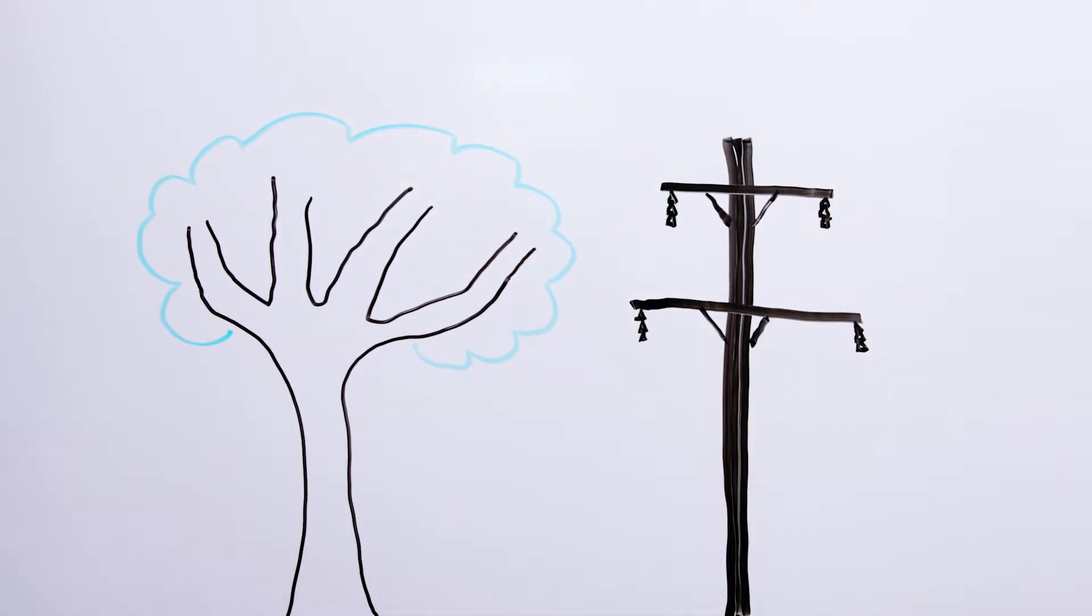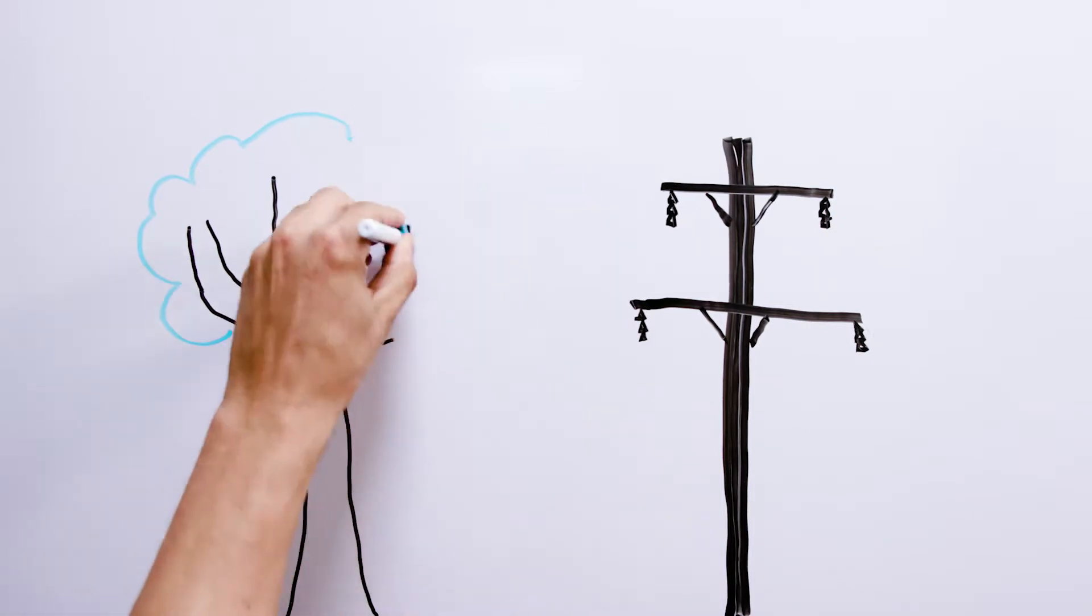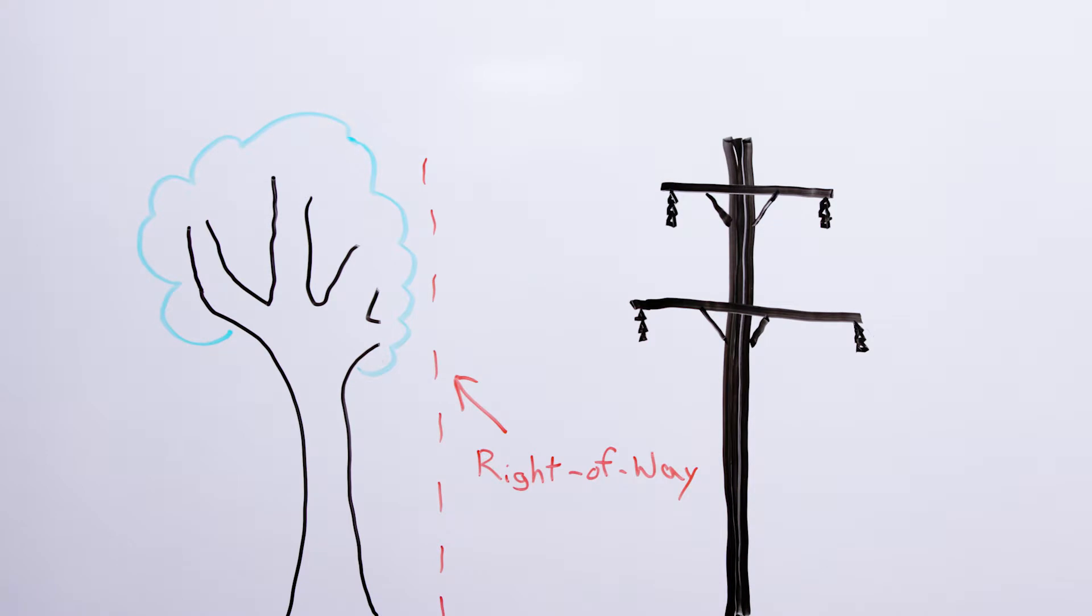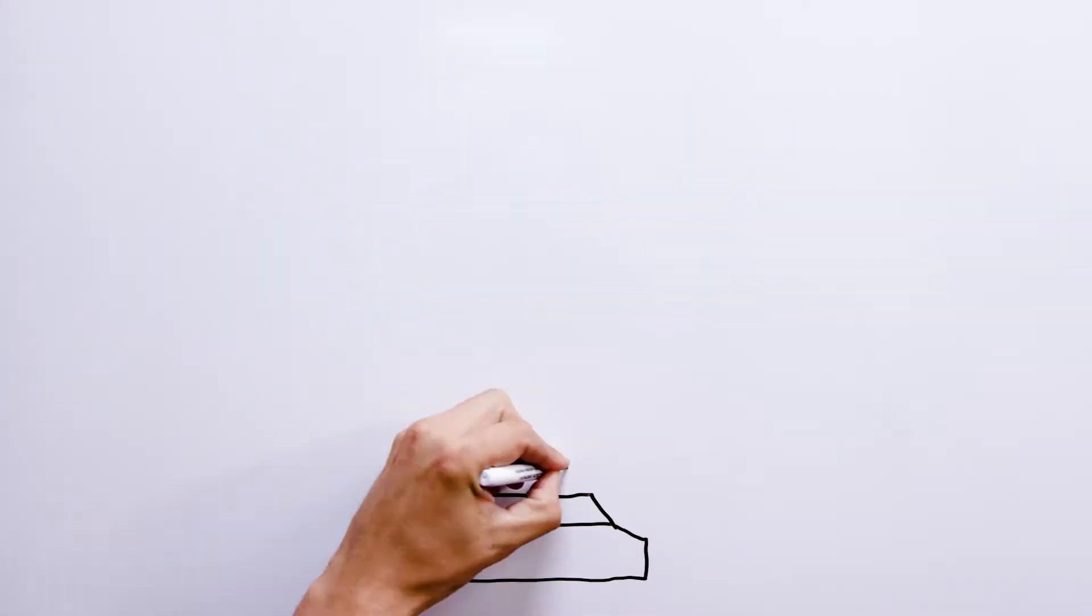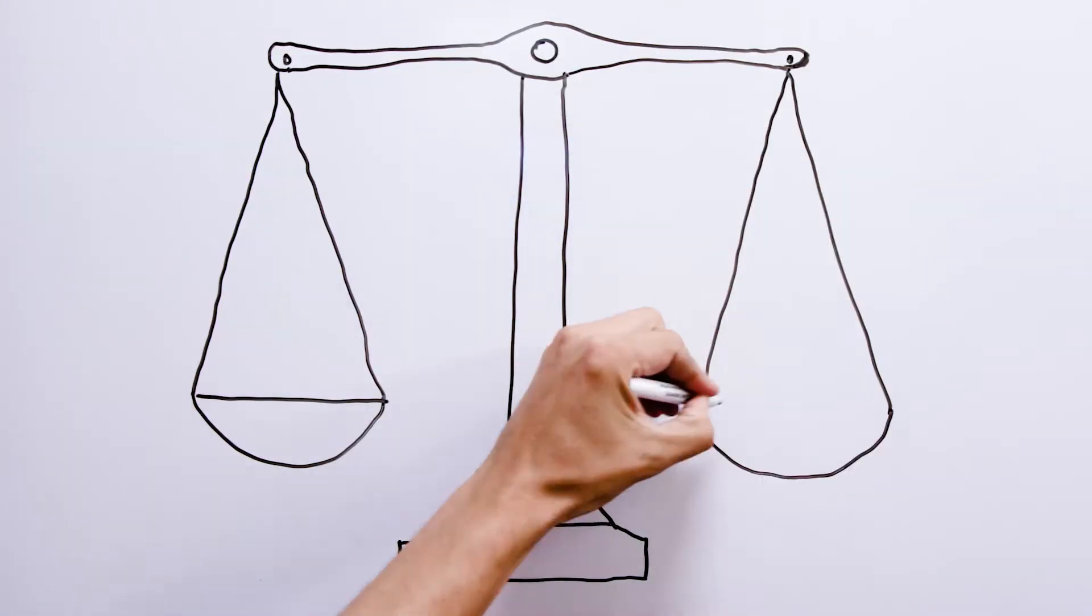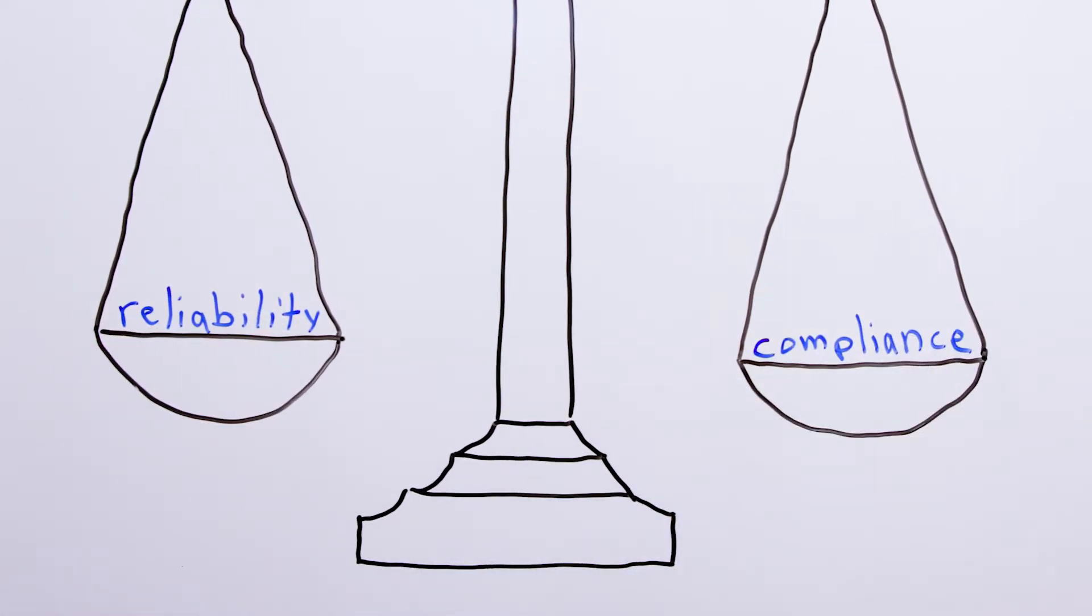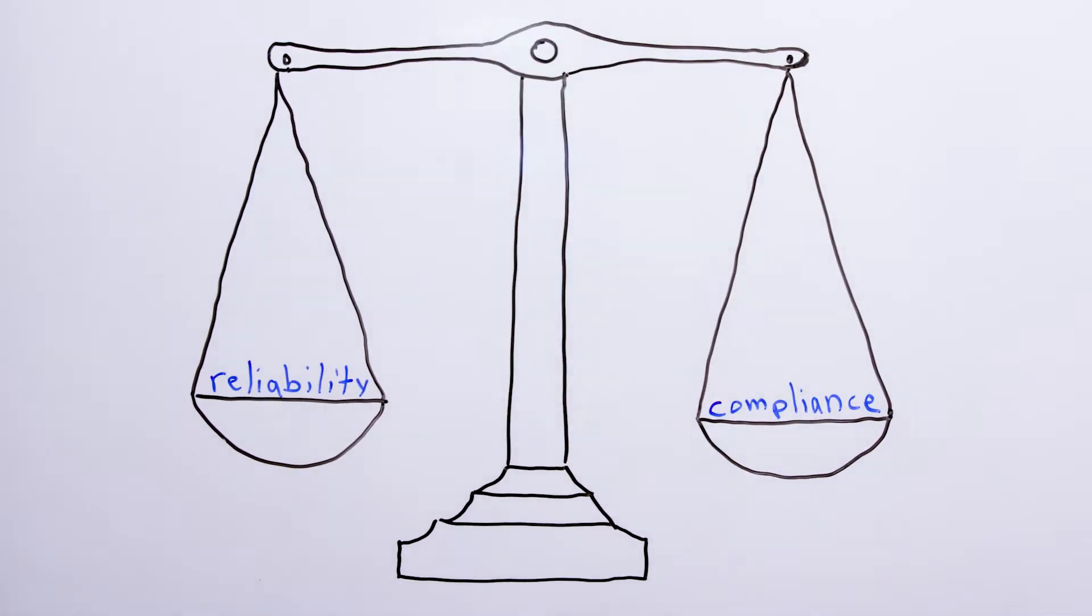We must maintain proper clearance between high voltage electric wires and nearby trees and vegetation to ensure safe, reliable delivery of electricity service to you. The goal is to balance our society's need for reliable energy with respect for the environment while complying with all applicable laws and federal requirements.